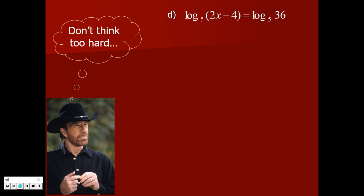Special case F: log base 5 of (2x minus 4) equals log base 5 of 36. Both sides have log base 5, so that part of the equation is already equal. When you've got log base 5 on both sides like that, you can just drop the log base 5 — now you just need the inner parts to be equal. You get 2x minus 4 equals 36. Move the negative 4 over, divide by 2, and away you go.